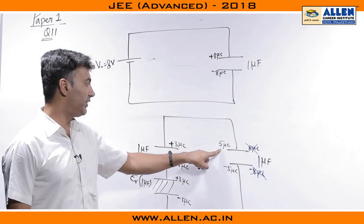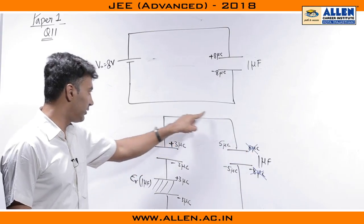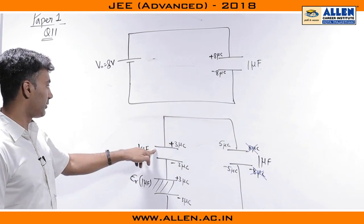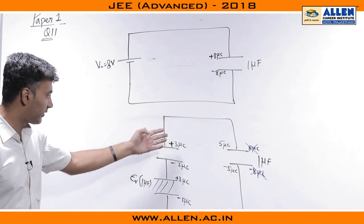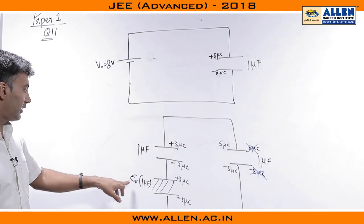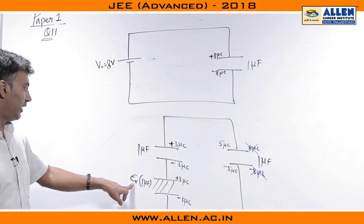Since the initial charge was 8 and the final charge is 5, obviously plus 3 micro coulomb charge must have flown to this particular plate. Applying the ideas of induction, we fill in the charges as possible. Now, they had asked us to find out the value for epsilon r.